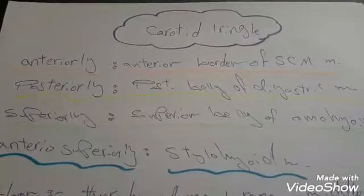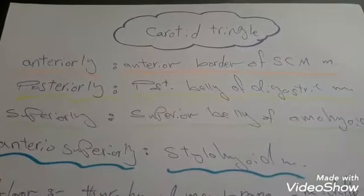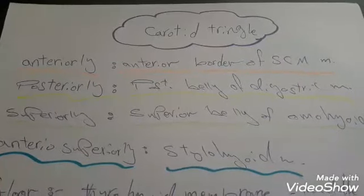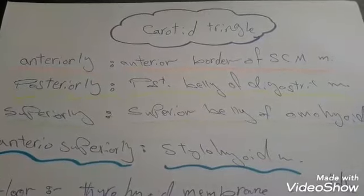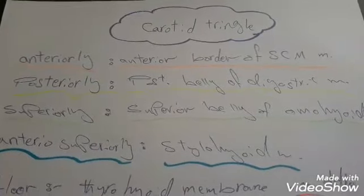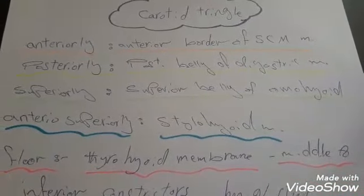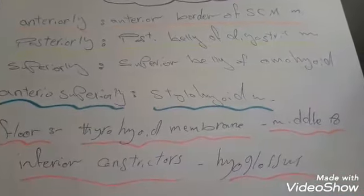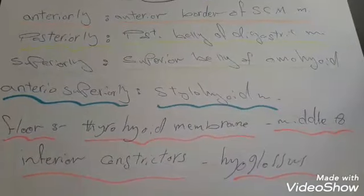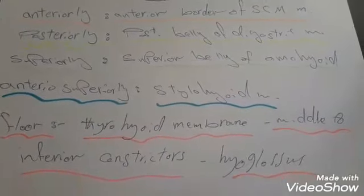The boundaries of the carotid triangle: anteriorly, the anterior border of sternocleidomastoid muscle; posteriorly, the posterior belly of digastric muscle; superiorly, superior belly of omohyoid muscle; anterior superiorly, stylohyoid muscle; and the floor formed by the thyrohyoid membrane, middle and inferior constrictors, and hyoglossus muscle.